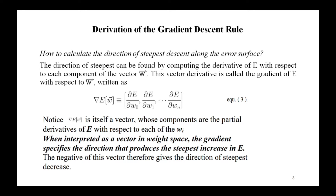The direction of steepest descent can be found by computing the derivative of capital E with respect to each component of vector w. This vector derivative is called the gradient of E with respect to vector w, written using the nabla symbol — which looks like the opposite of delta.